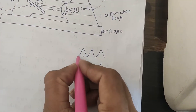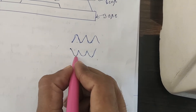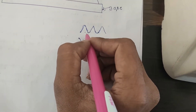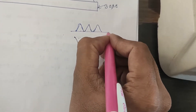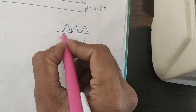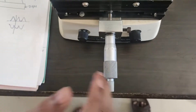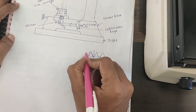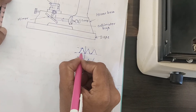In the eyepiece view, you can observe one side of the thread and the bottom side of the thread. There is a horizontal line and a vertical line visible. To measure the major diameter, adjust the horizontal line to the crest of the thread — the crest is the top peak — and the root is the bottom of the thread.